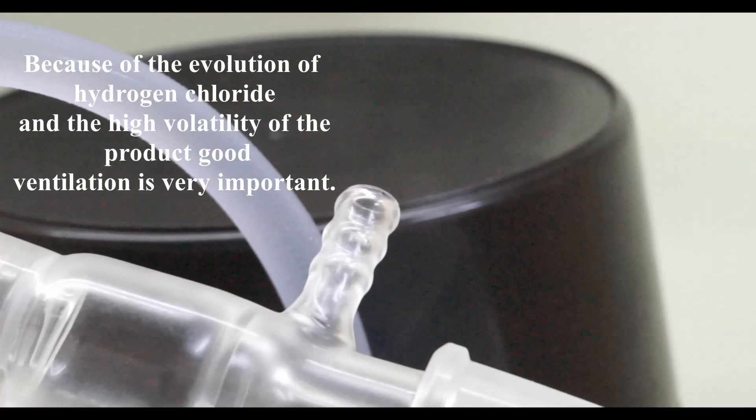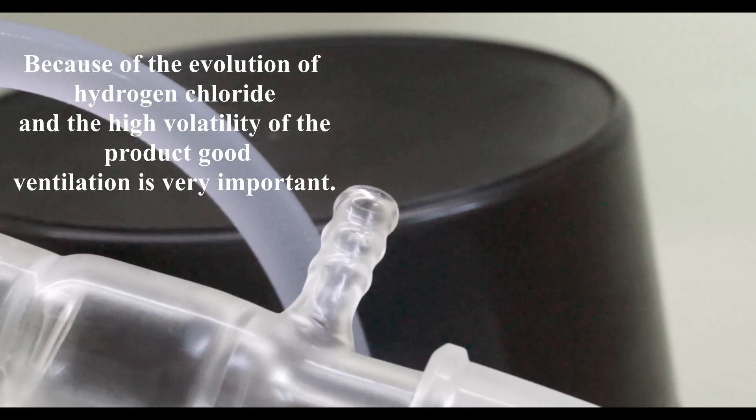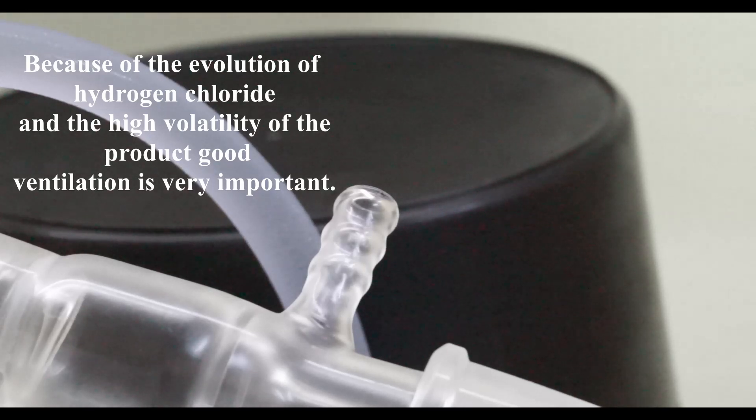As the reaction mixture heats up we see evidence of hydrogen chloride gas coming out of the apparatus. It is very important to heat slowly at the beginning so that we do not overheat the reaction mixture because this would lead to an even more vigorous evolution of hydrogen chloride gas and it could carry away a lot of our low boiling product.